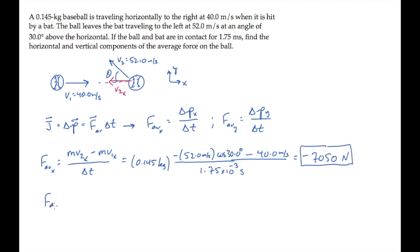We do the same thing for the y component of the average force. It's mv2y minus mv1y, the change in the y component of momentum, divided by delta t. And we can substitute numbers factoring out the mass again. The y component of v2 is shown here. It's v2 sin theta. And calculating shows us the answer is 2150 newtons.